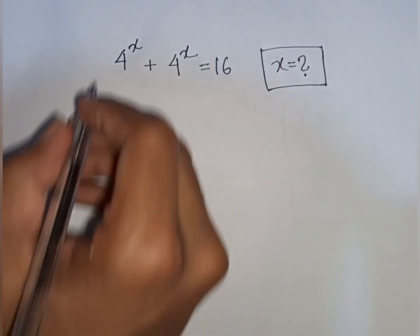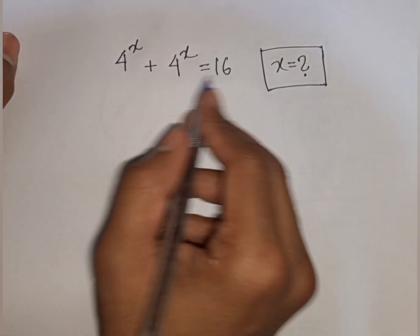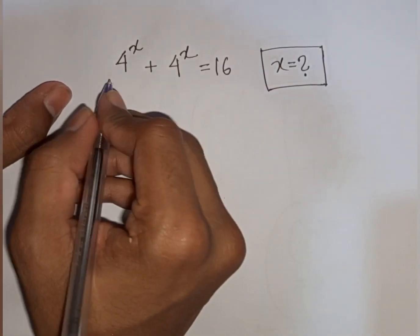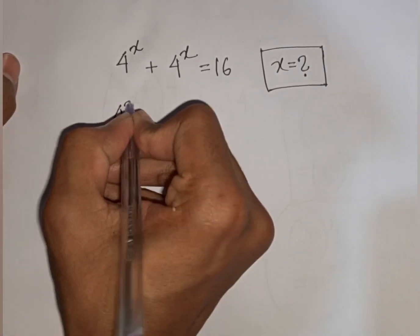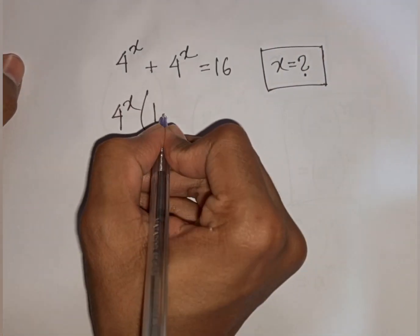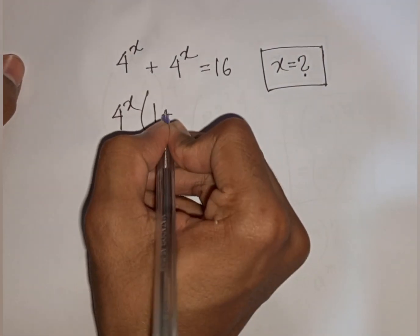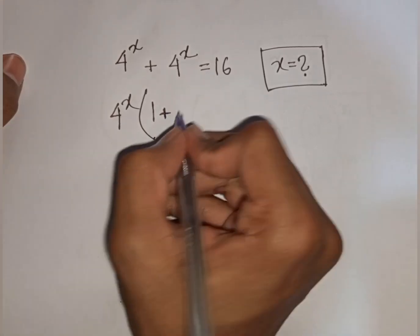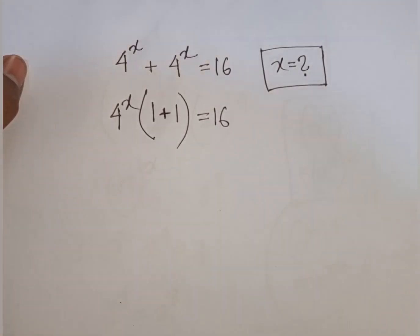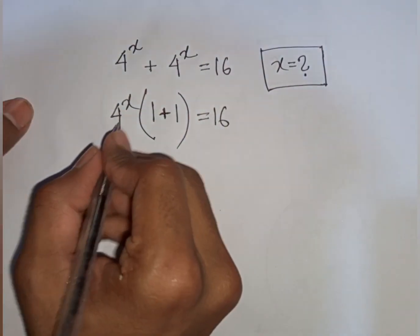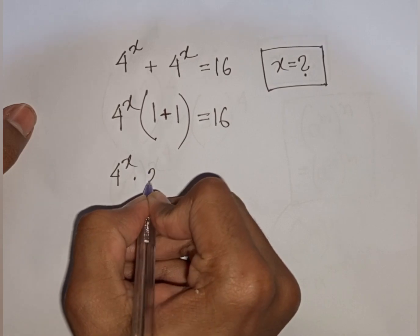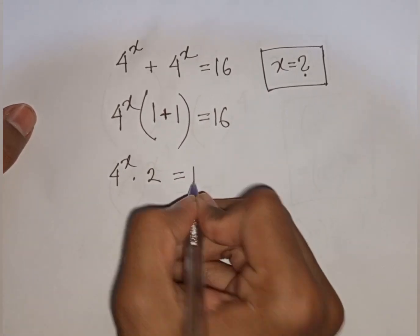Second problem: solve 4^x + 4^x = 16, find the value of x. From the left side, we factor out 4^x as common. So 4^x times (1 + 1) — that means 2 — equals 16.